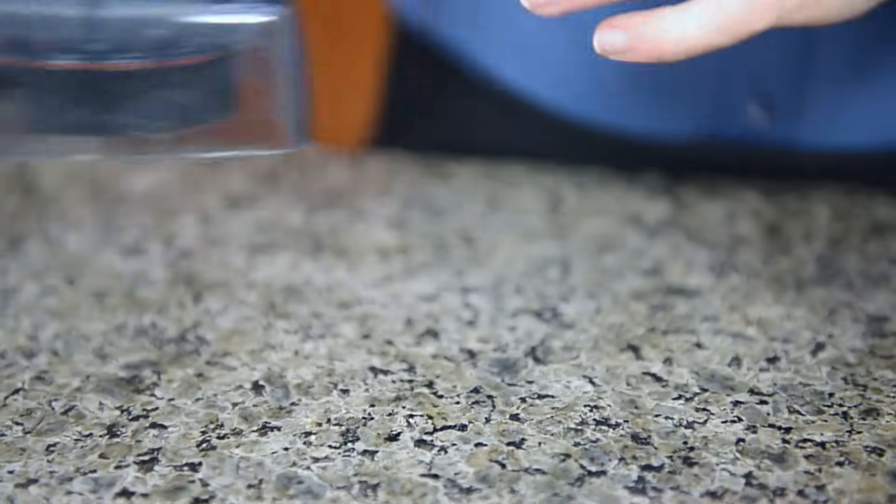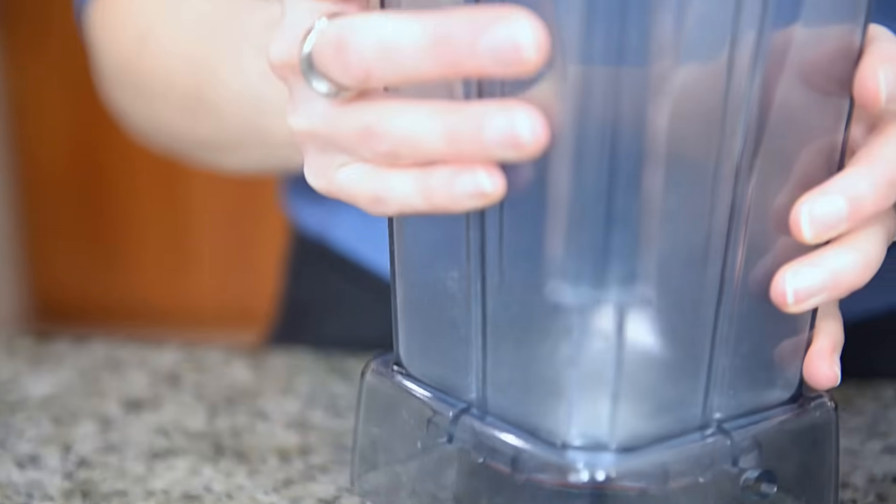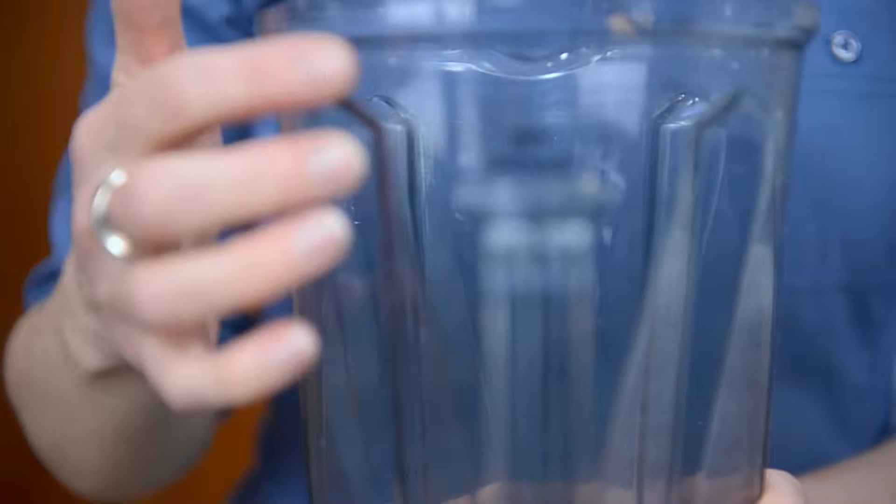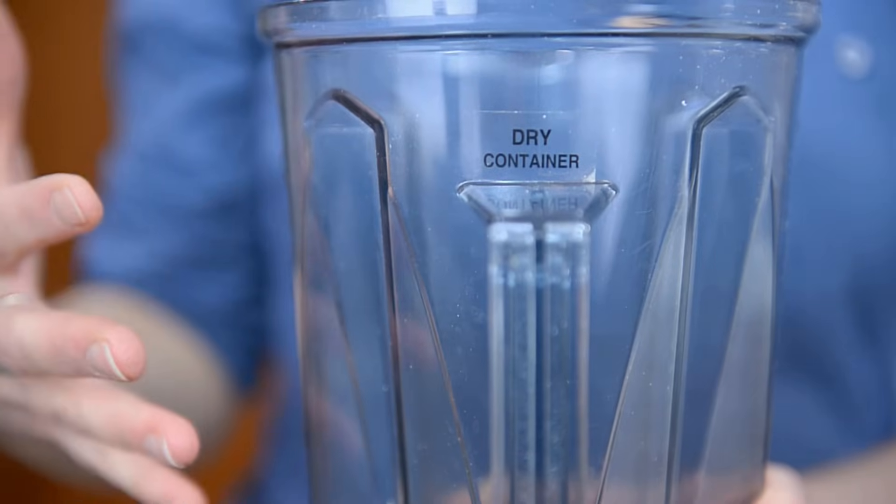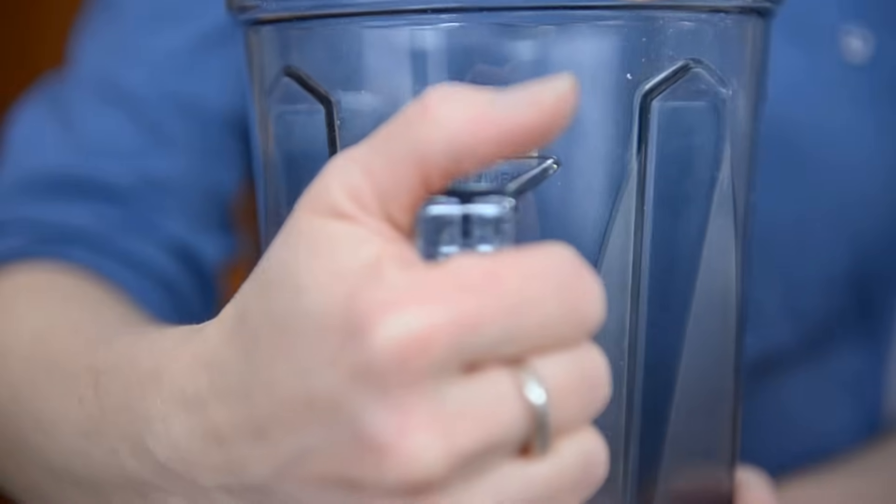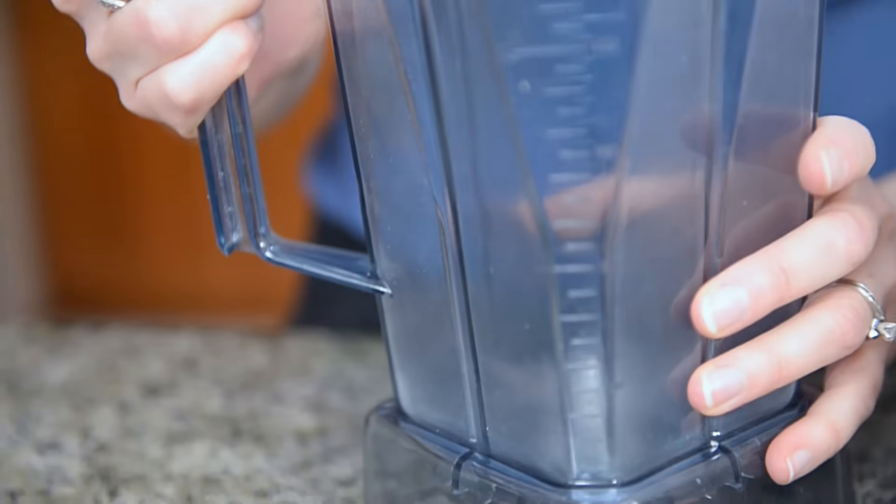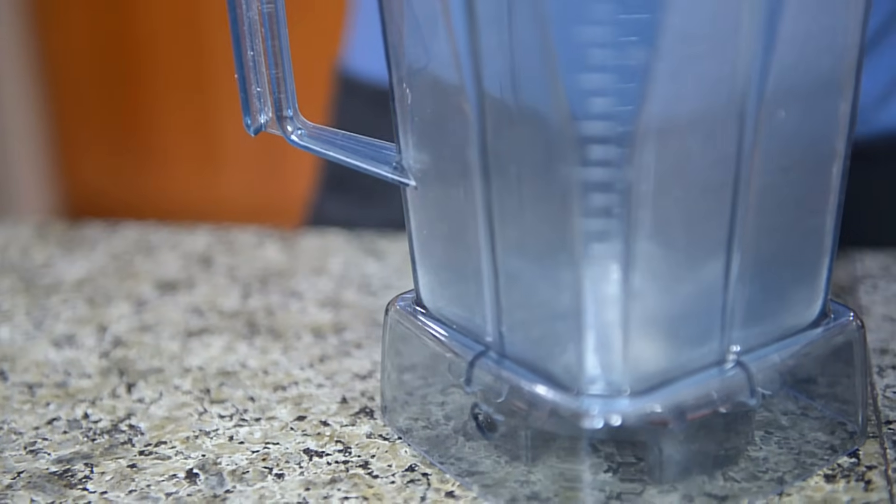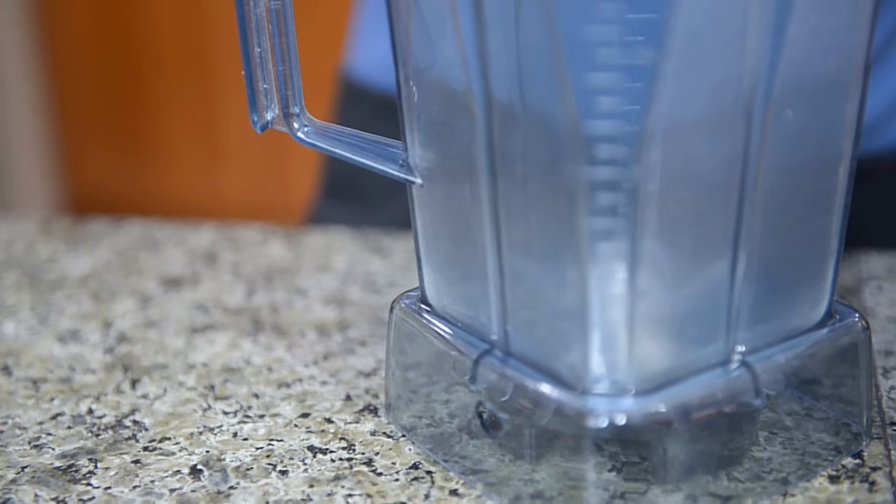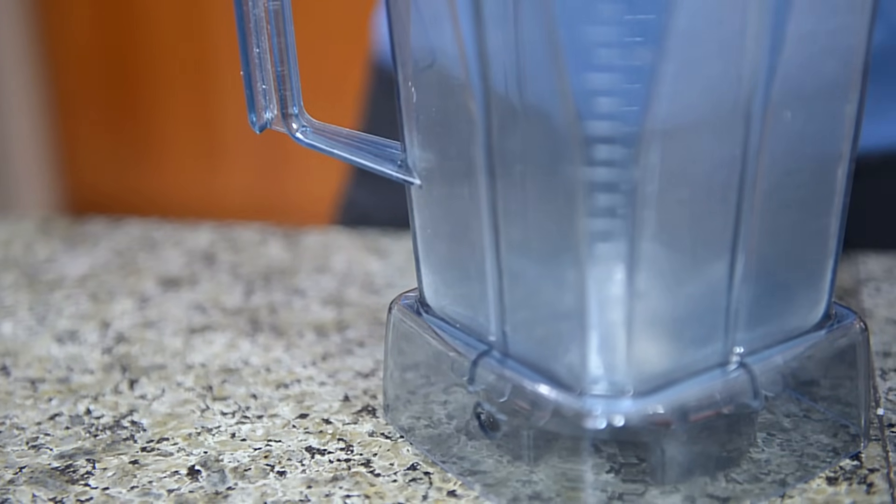To make our coconut butter, I'm going to use my Vitamix, and today I'm going to use the dry container. The blade is actually faster in the dry container, which makes it better for making any type of nut butter. I'm going to add two cups of coconut flakes, unsweetened, to my Vitamix.